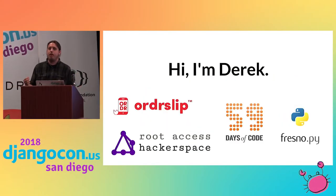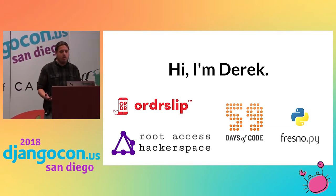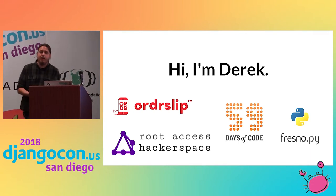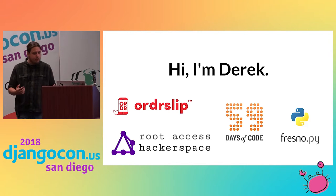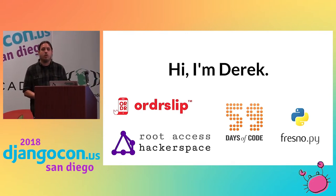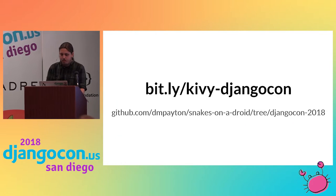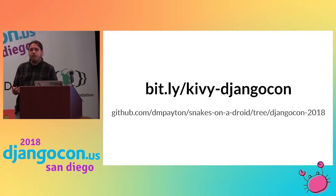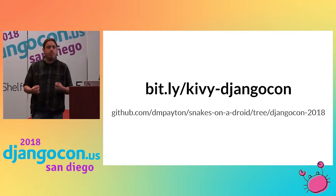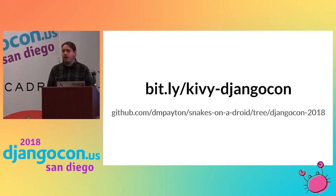My name is Derek. By day I'm the director of development at OrderSlip — we build apps for small restaurants to have mobile ordering. By night and in my free time, I co-founded a hacker space which is the only one between LA and the Bay Area. I'm on the board of directors for 59 Days of Code, working on tech education in the Central Valley, and I run the local Fresno Python chapter. All slides and code are online on GitHub at bit.ly/kivy-djangocon.